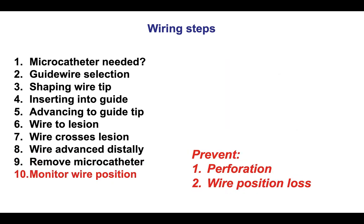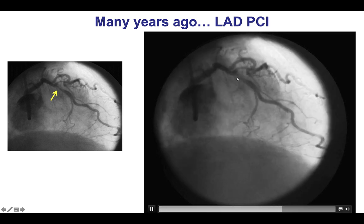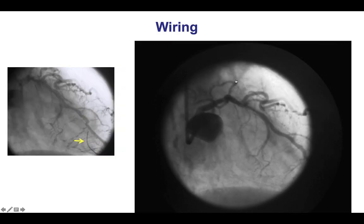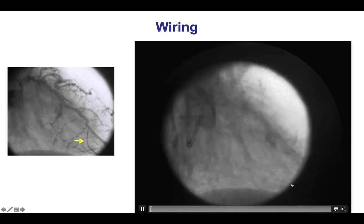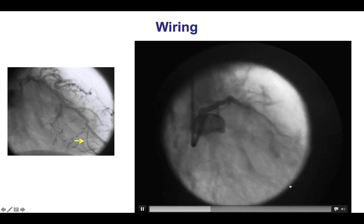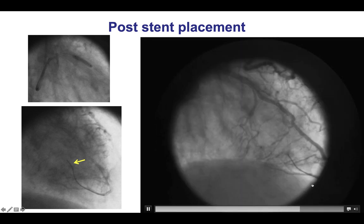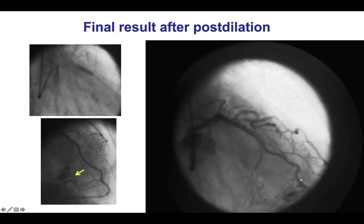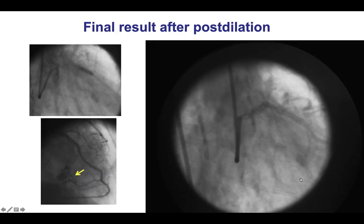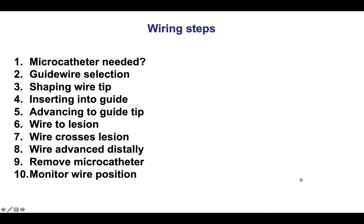The final step of wiring is to keep an eye on the distal wire position. If it goes too far it causes a perforation; if it comes back, the position can be lost. In one example, a mid-LAD lesion was successfully crossed but the wire was a little too far down. Part of the challenge is that when coning is done to minimize radiation doses, we may not get a good view of the distal guide wire position. A stent was placed with a nice result, but the wire still seemed a little too far — and then after the stent was post-dilated, there was a distal wire perforation. The wire should not go too far and we should always watch the wire tip.